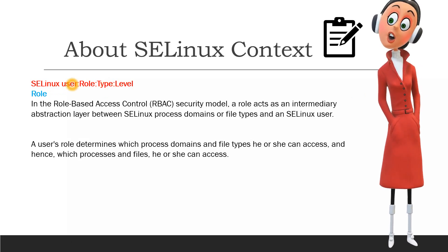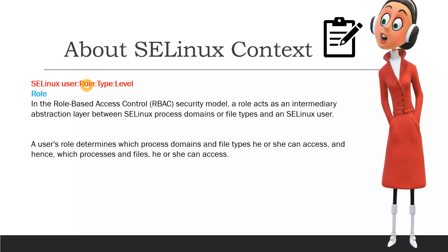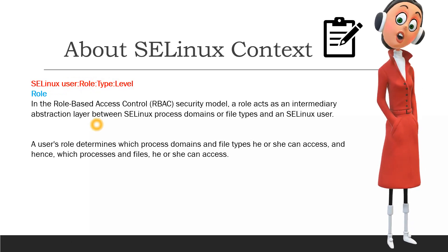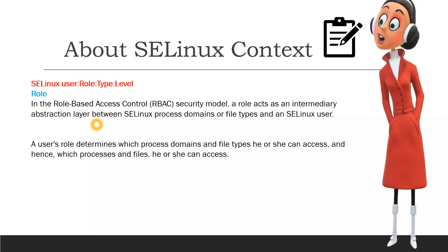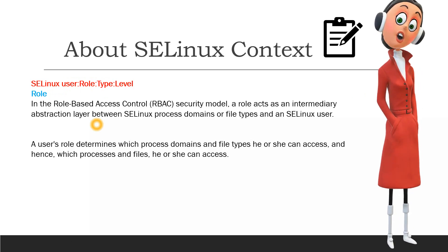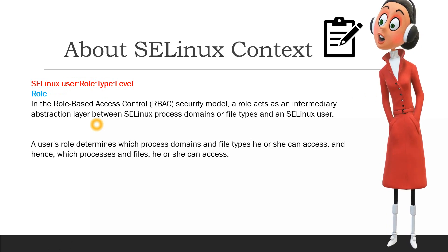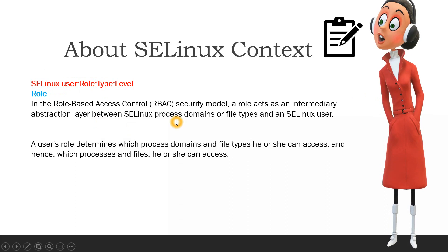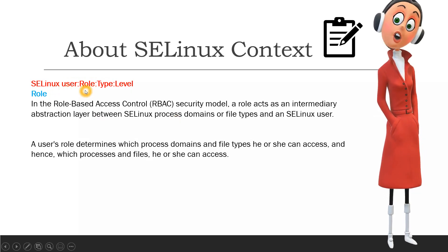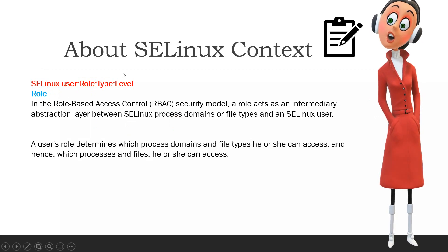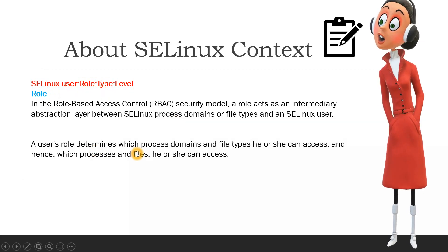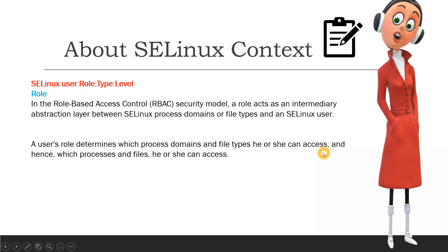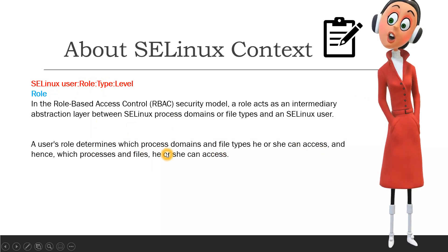Processes run in specific SELinux domains and file system objects are assigned to SELinux file types. SELinux users are authorized to perform specified roles, and roles are authorized for specific domains and file types. For every domain — which is the process — and for every type of file, a role will be assigned that defines who can access which file. A user's role determines which process domains and file types they can access.